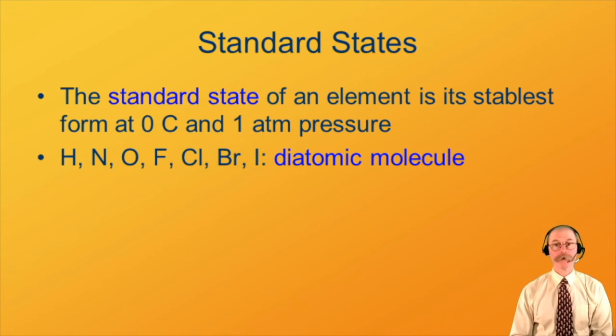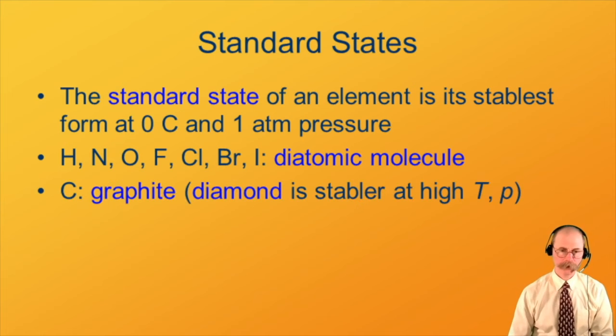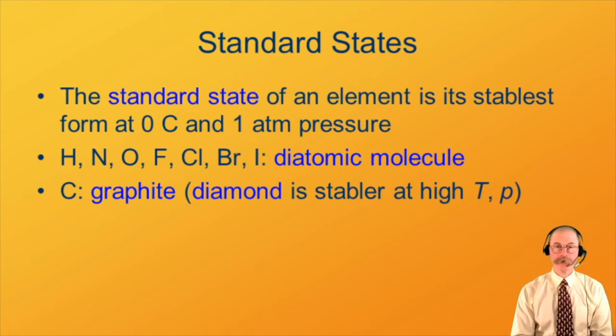Back to standard states. For the elements hydrogen, nitrogen, oxygen, fluorine, chlorine, bromine, and iodine, the standard state is the diatomic molecules H₂, N₂, O₂, F₂, Cl₂, Br₂, I₂. For the element carbon, the standard state is graphite. Diamond is a slightly higher energy.